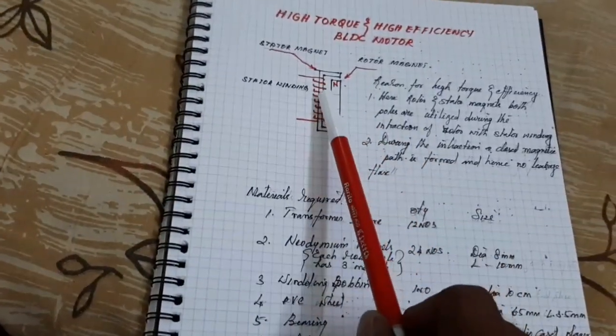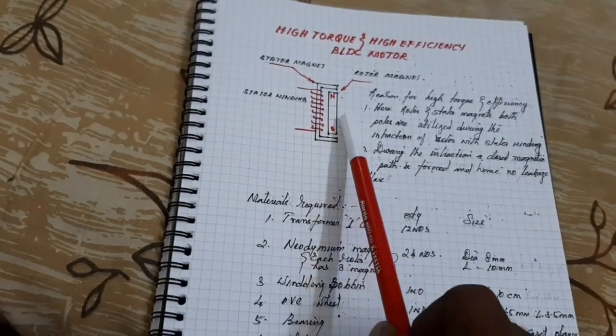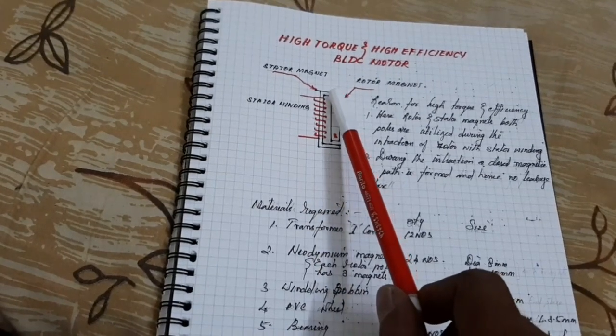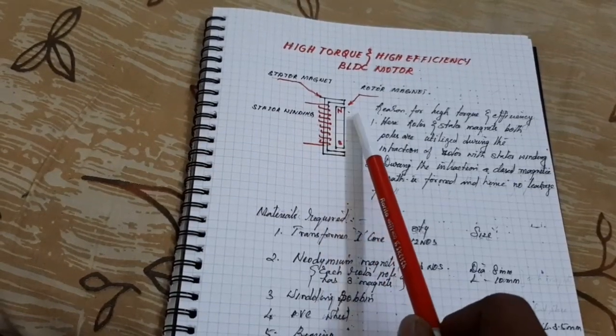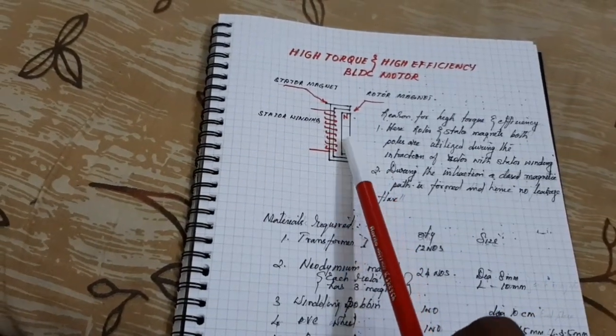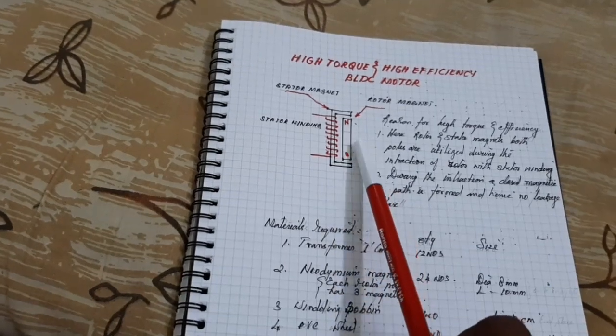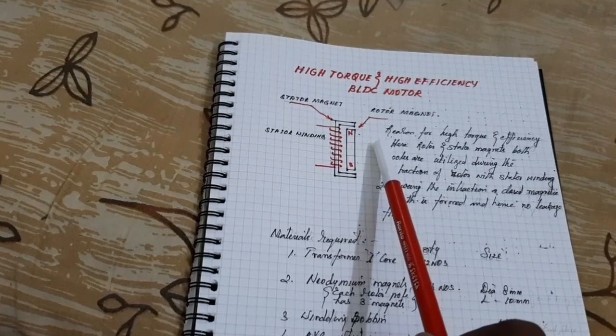Here, this is the stator, one of the stator windings, and this is the rotor magnet. The electromagnet has north pole and south pole, and also the rotor magnet has north pole and south pole. So both poles of the electromagnet and the rotor magnets are interacted during the rotation.